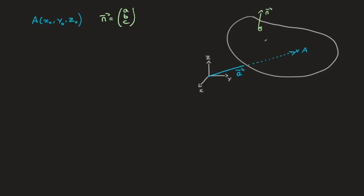I'll add a completely generic point P on the plane, whose position vector I'll call r, and so r has components x, y, and z. When I say a generic point P, I mean a point that could be absolutely anywhere on the plane, which is why its components are the variables x, y, and z.